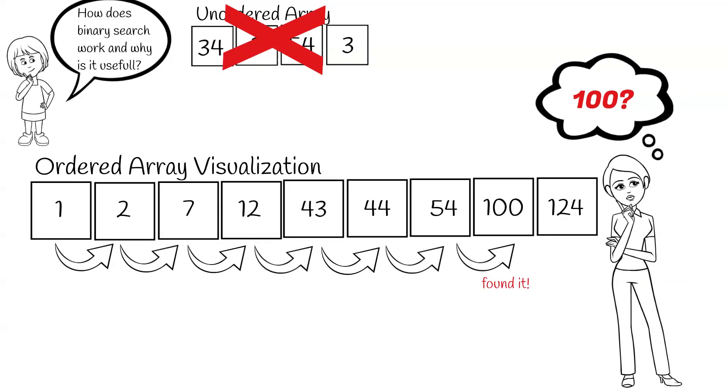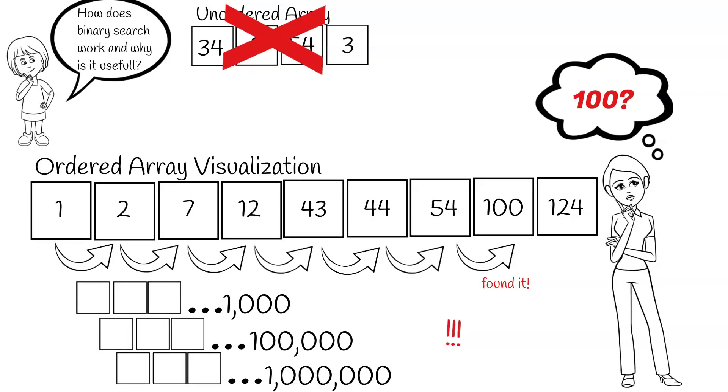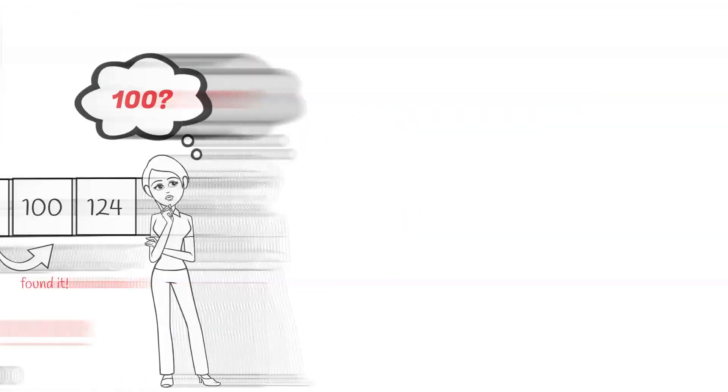What if we have to do this for an array containing 1000 or 100,000 or even a million elements? This is where something like binary search can be useful. So let's try this again.